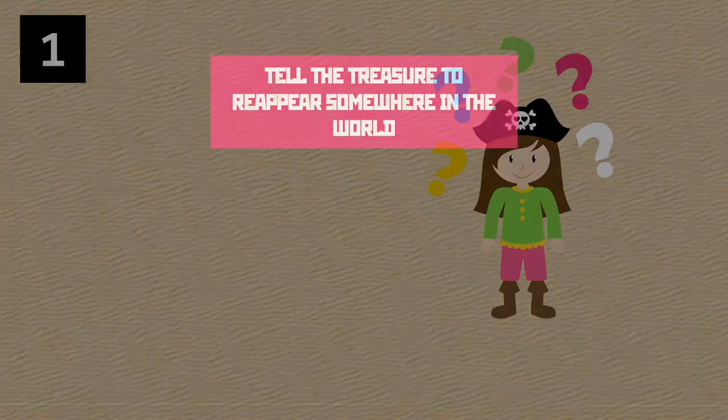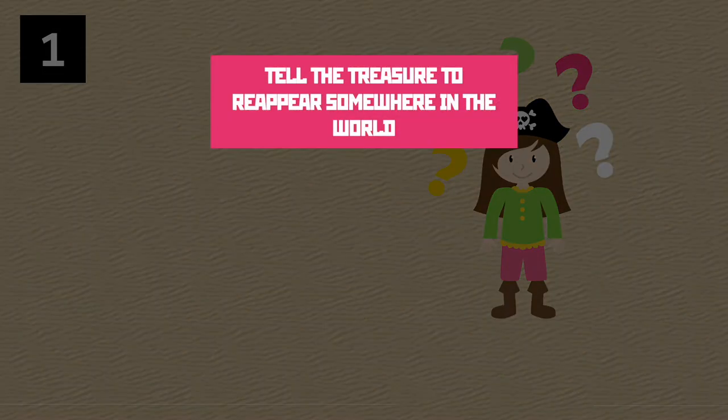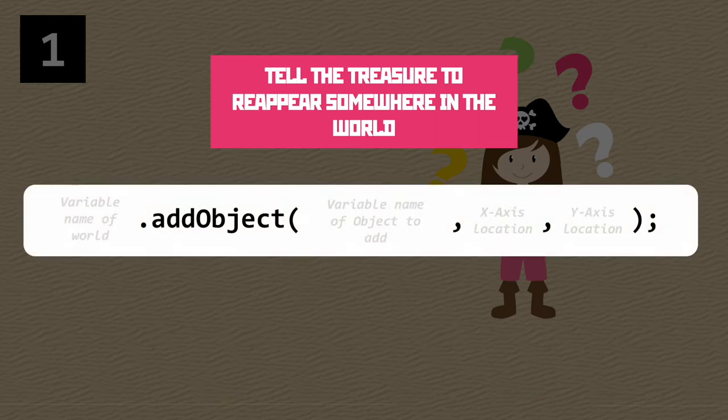This is one of the largest single statements we've ever used in Java. It's got a great name though: addObject. However, there are a number of different bits we need to include in the function to get it working. Let's start with the leftmost part.